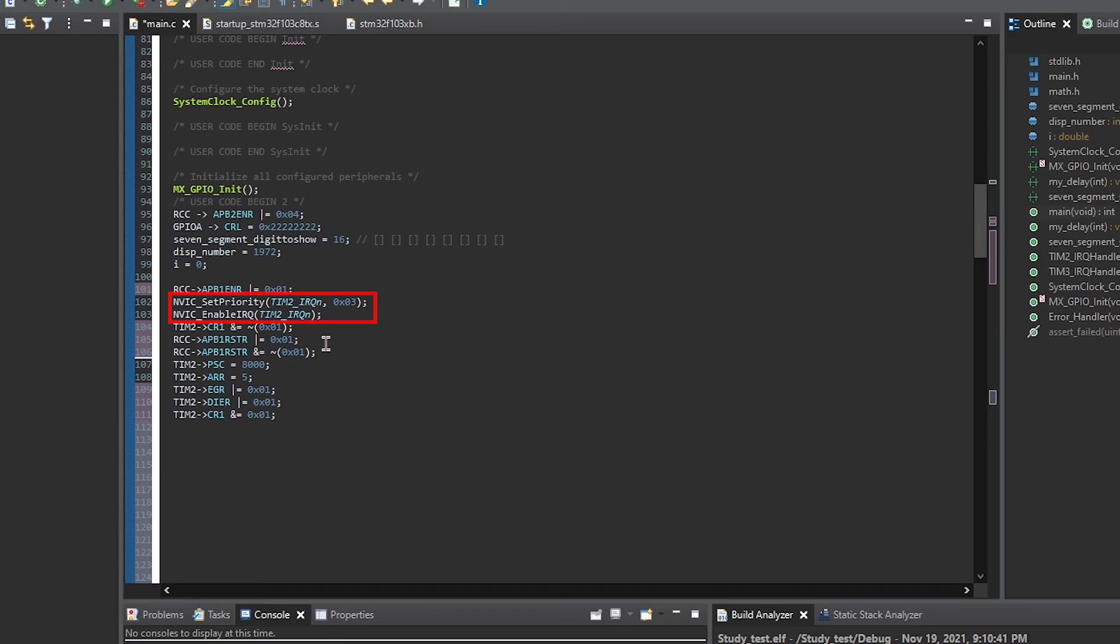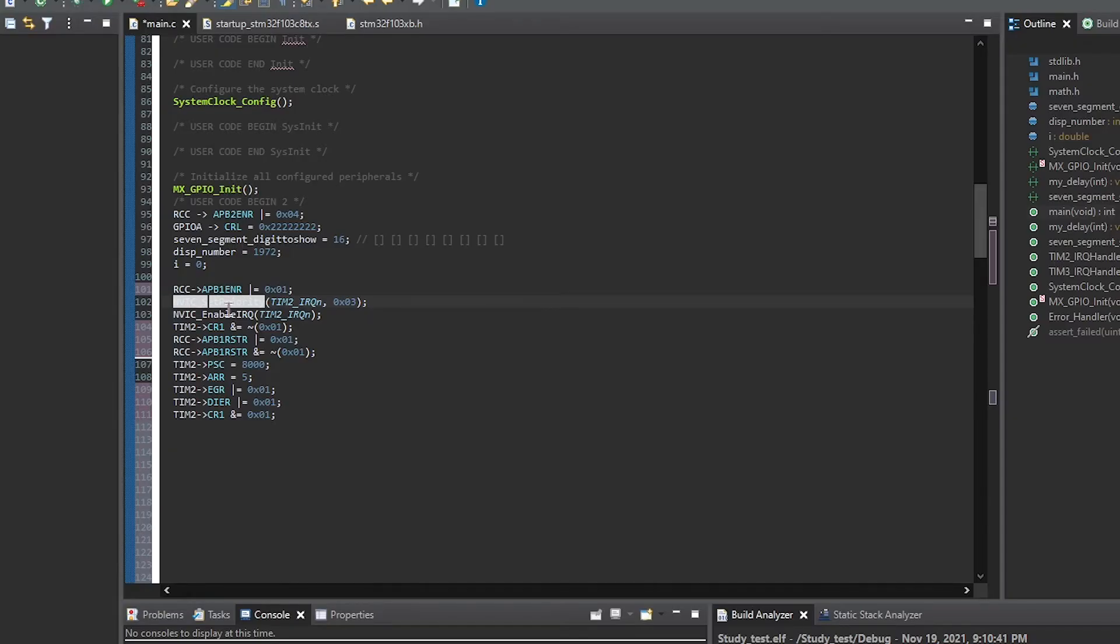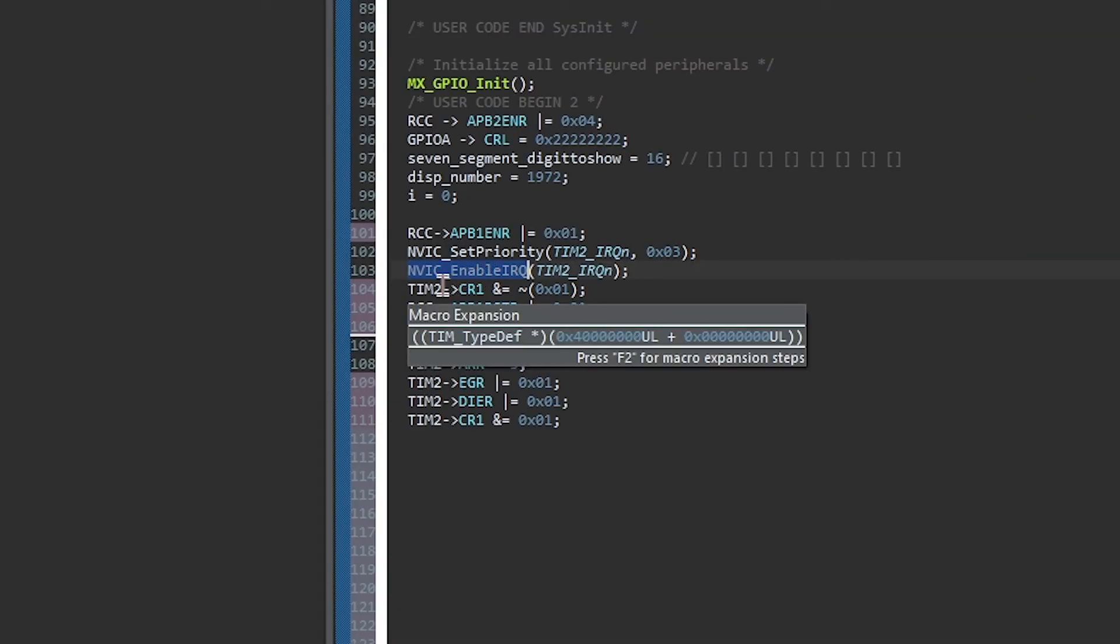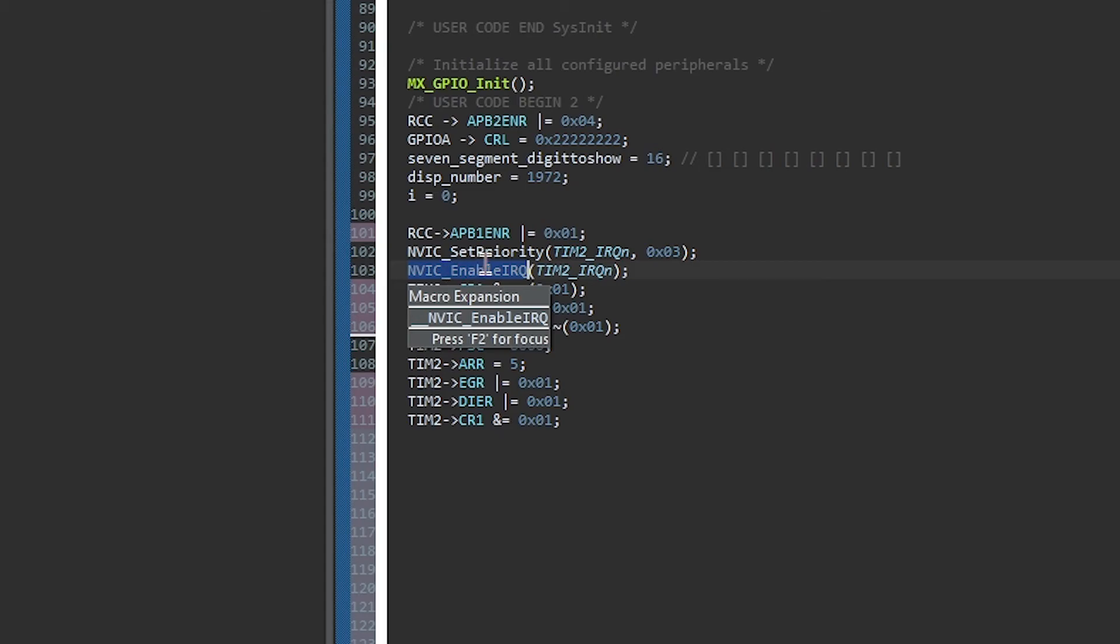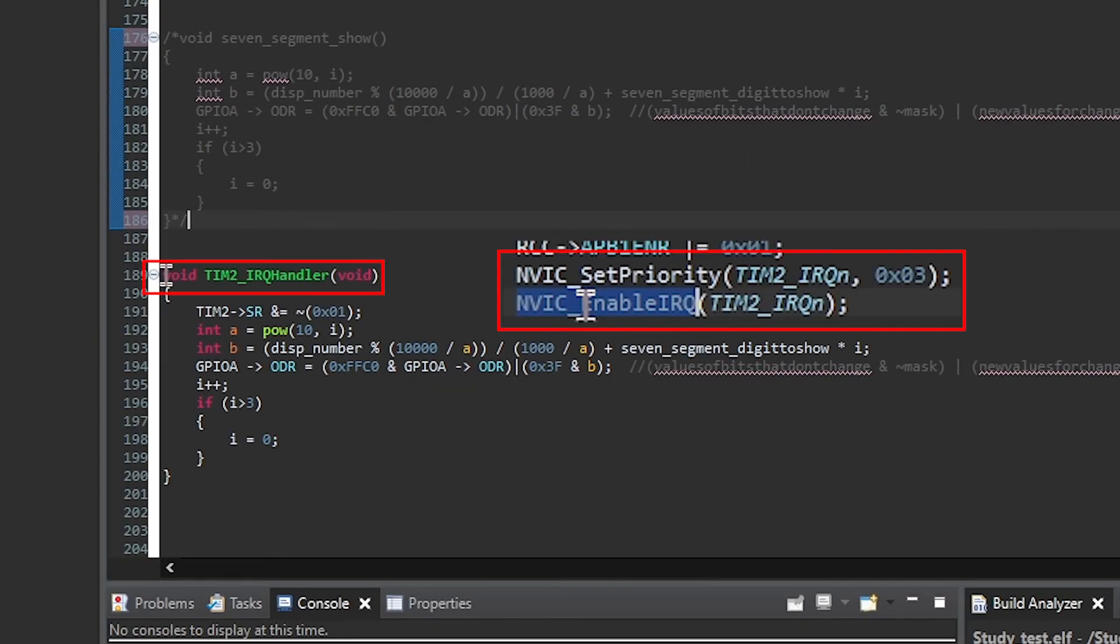Sadly, I couldn't figure out what these functions exactly do. What I know is that they configure registers called nested vector interrupt controller. However, these registers are not mentioned in the reference manual. You have to go to another reference manual and it's still kinda wishy-washy for me. So I maybe study this later, but I don't think it's necessary to do this this time. Basically, what we do here is we enable the interrupt request handler and set the priority. Now, every time overflow event occurs, this function runs, which I wrote right here.